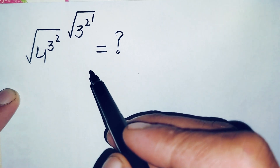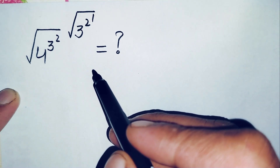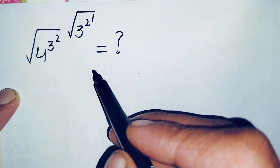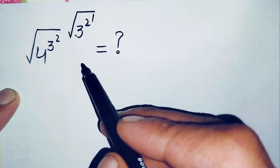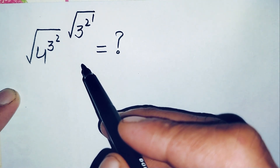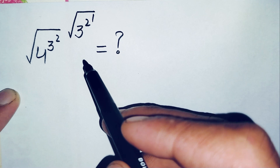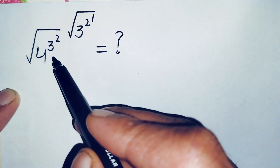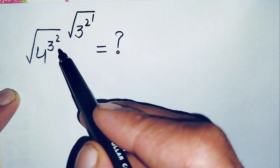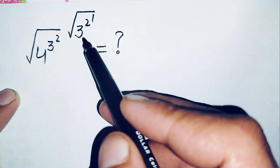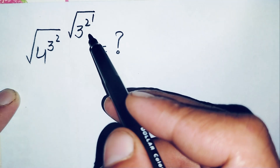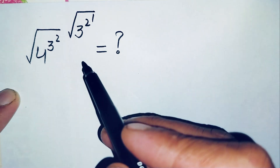Hello everyone, welcome back to Math Explorer. In this video I'm going to solve and find the value of this interesting and amazing simplification math problem: the square root of 4 raised to power 3, raised to power 2, whole raised to power the square root of 3 raised to power 2, raised to power 1.